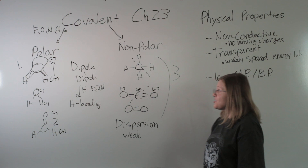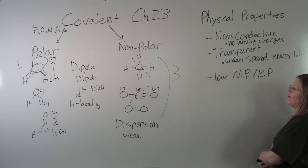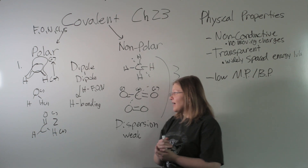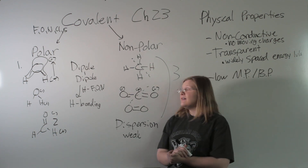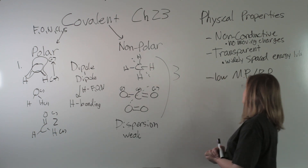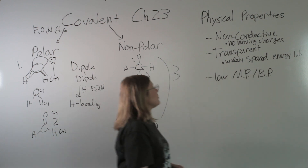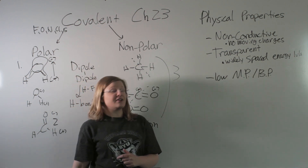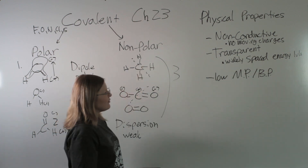In chapter 23, we talked about how to tell if a molecule is polar versus nonpolar, and what that can tell you about the melting and boiling point. We also covered the physical properties of molecular material: they are nonconductive, transparent, and have low melting and boiling points.